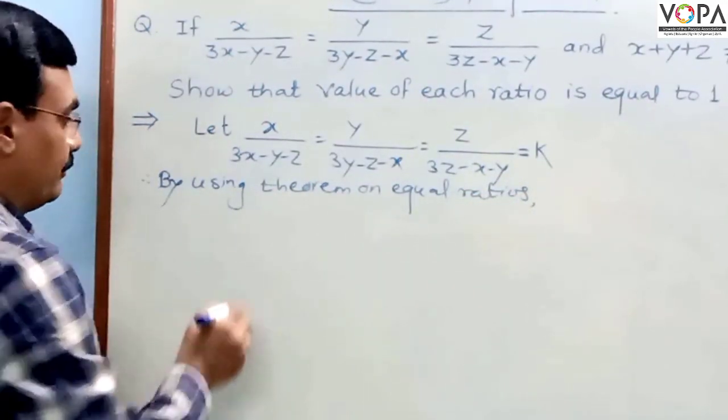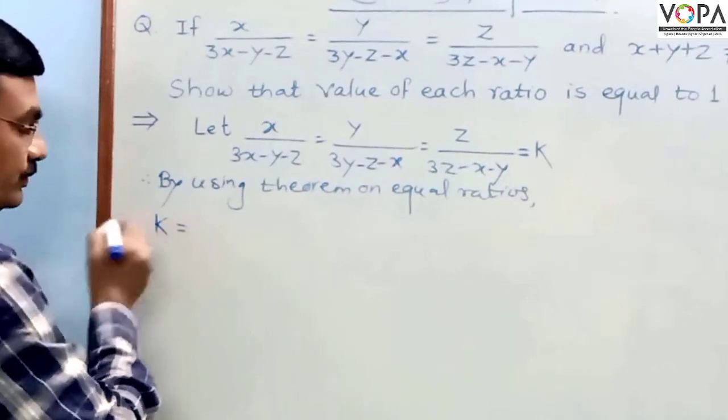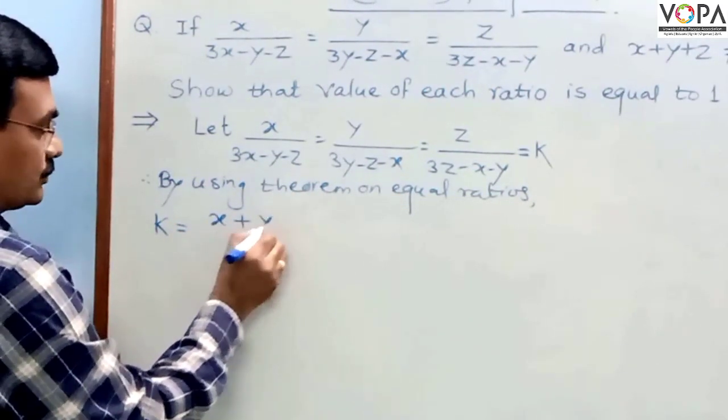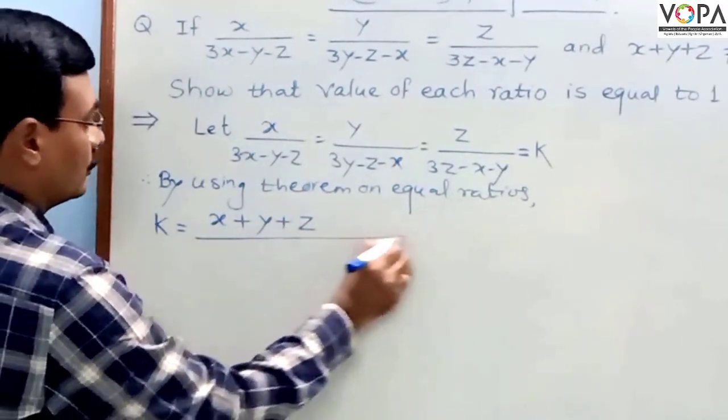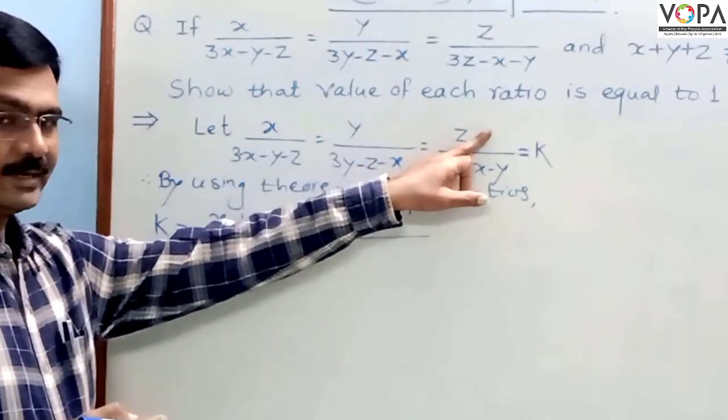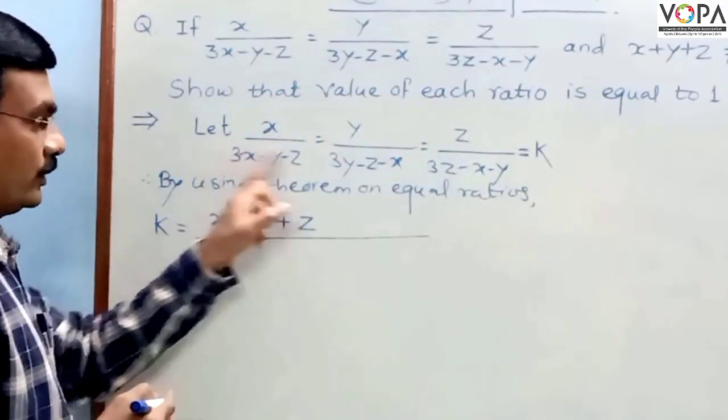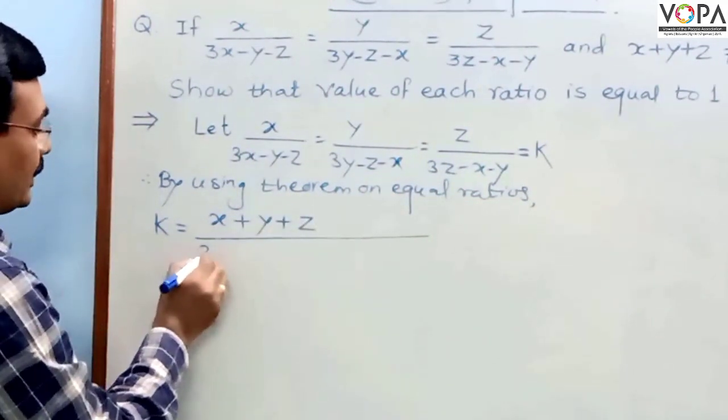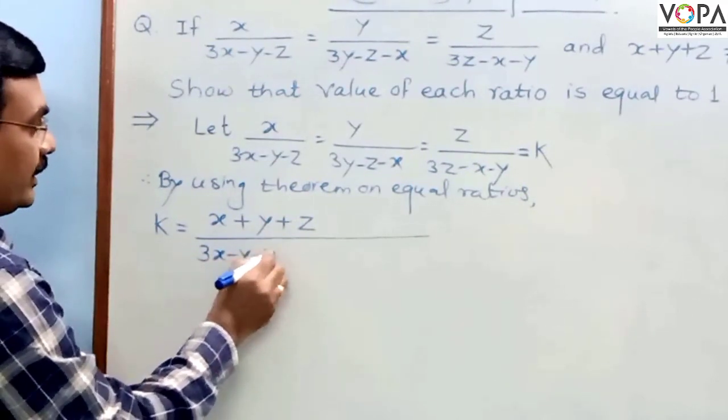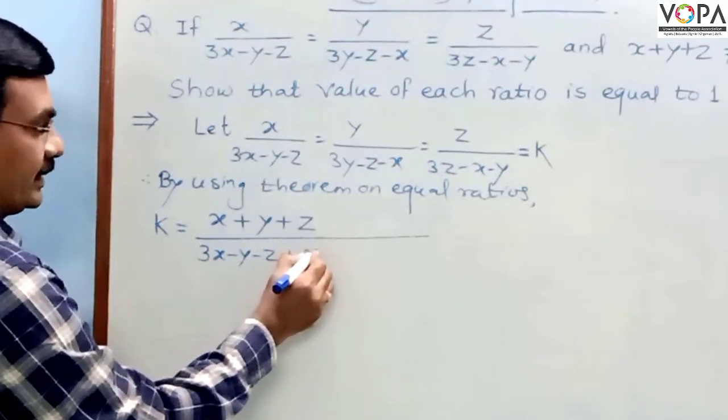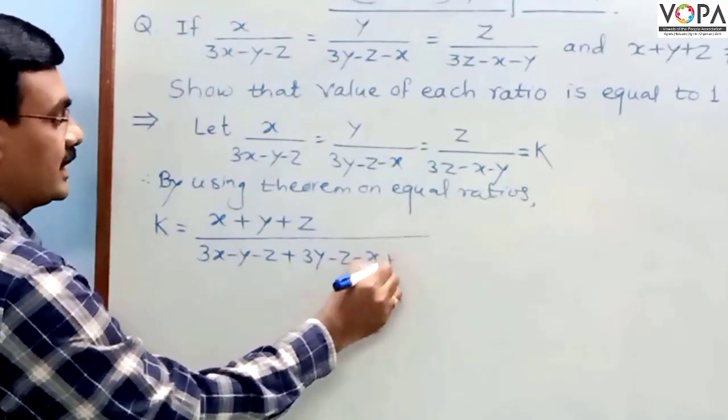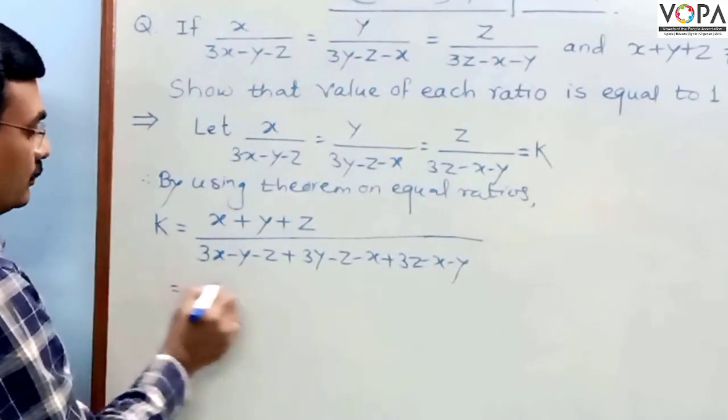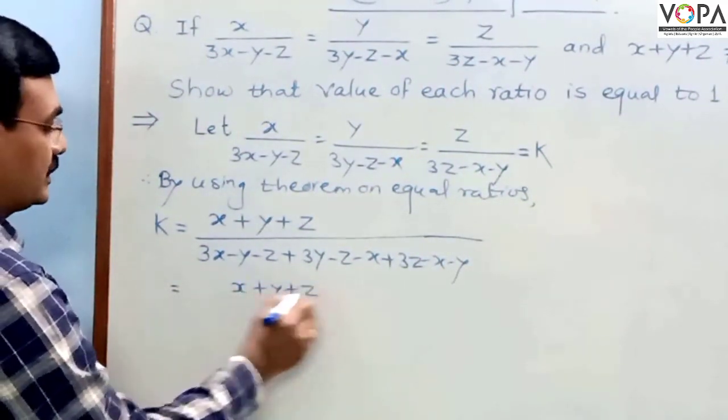By using the theorem of equal ratios, each of the ratios k can be written as the sum of numerators upon the sum of denominators. We add the numerators and at the same time add the denominators. So (2x minus y minus z) plus (2y minus z minus x) plus (2z minus x minus y) equals the numerator (x plus y plus z).